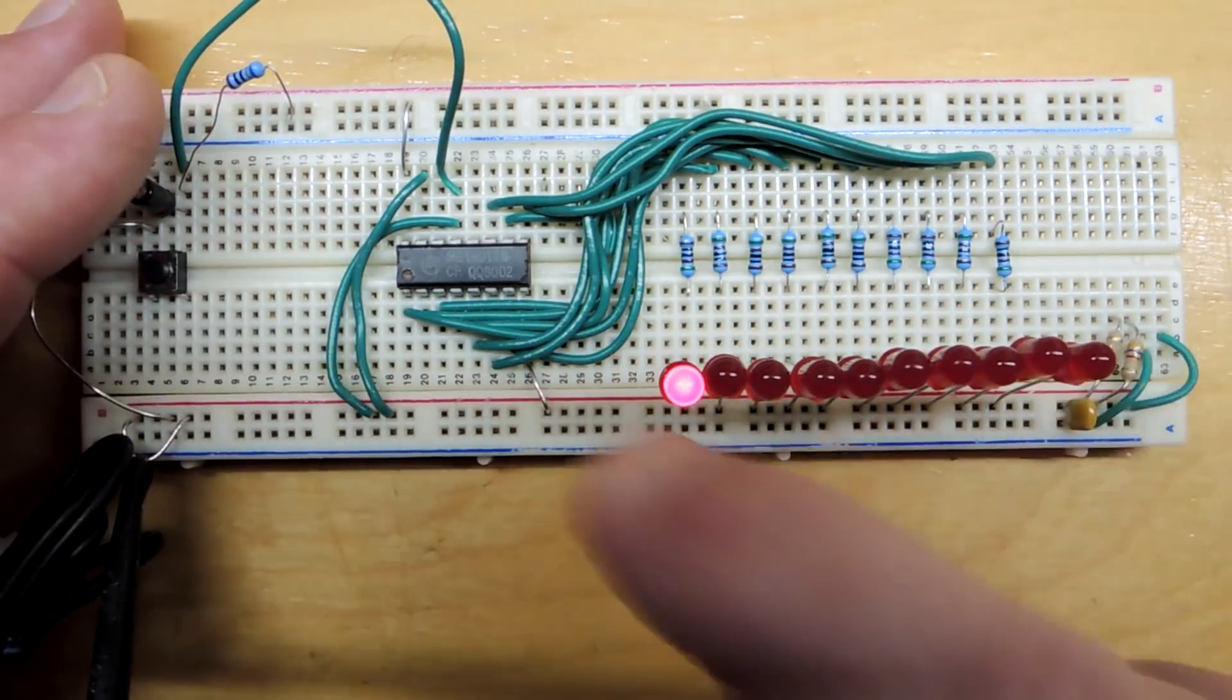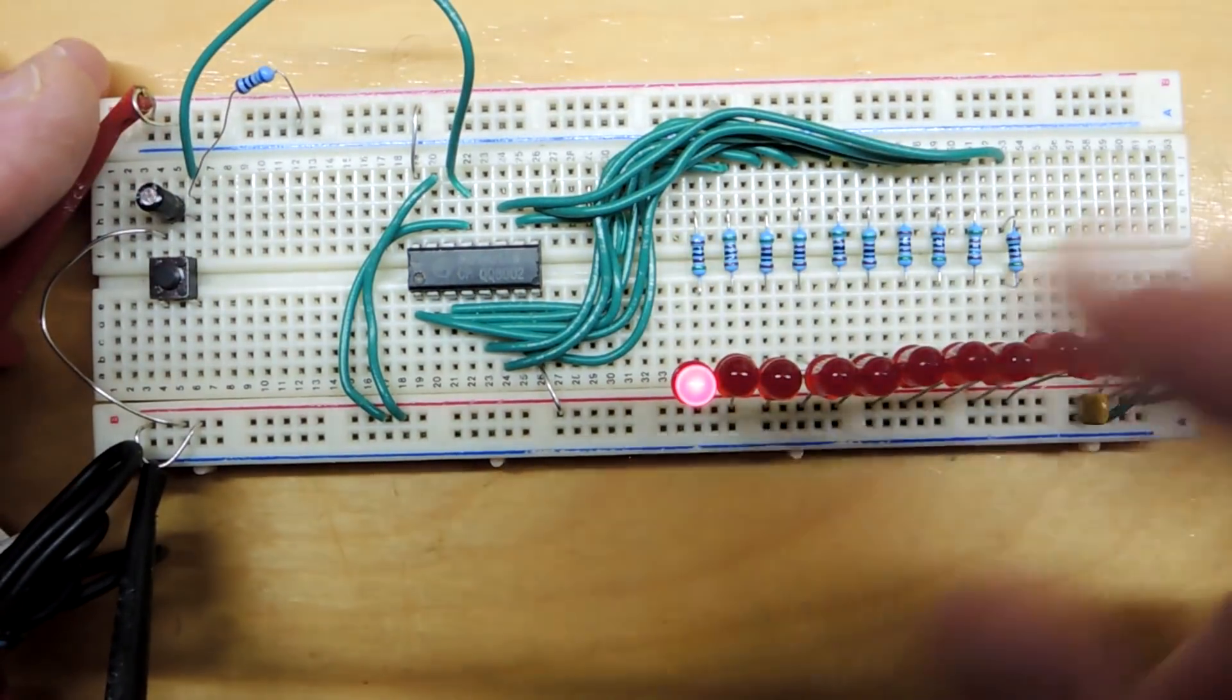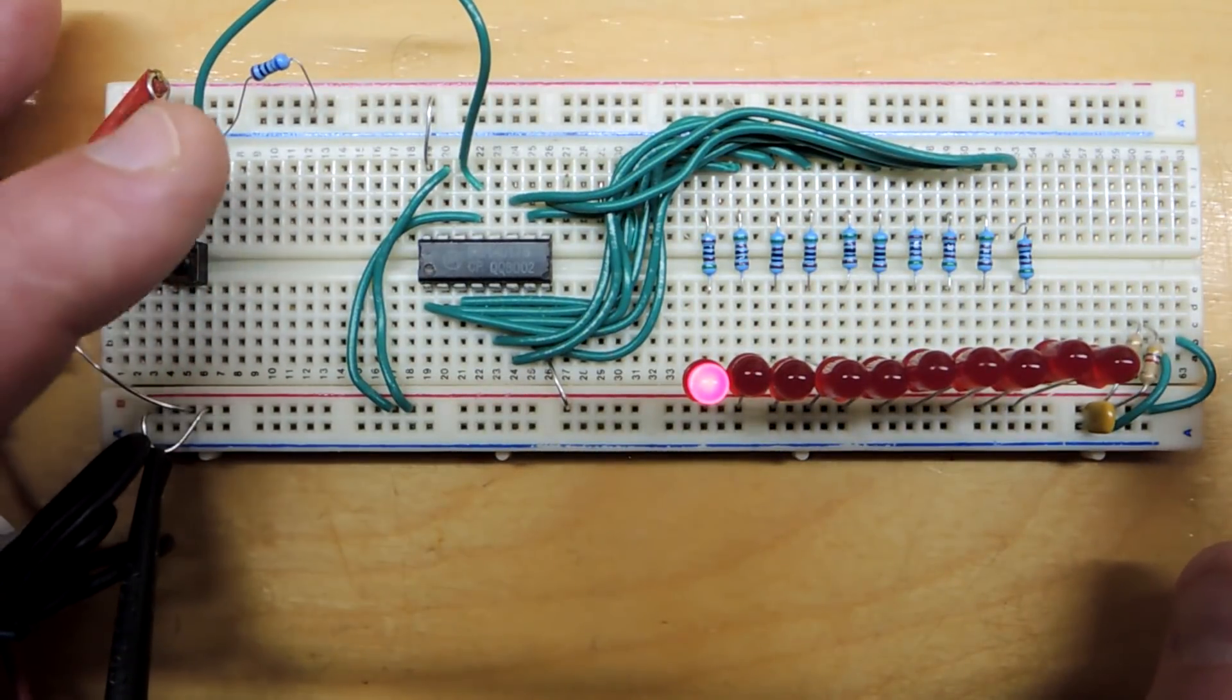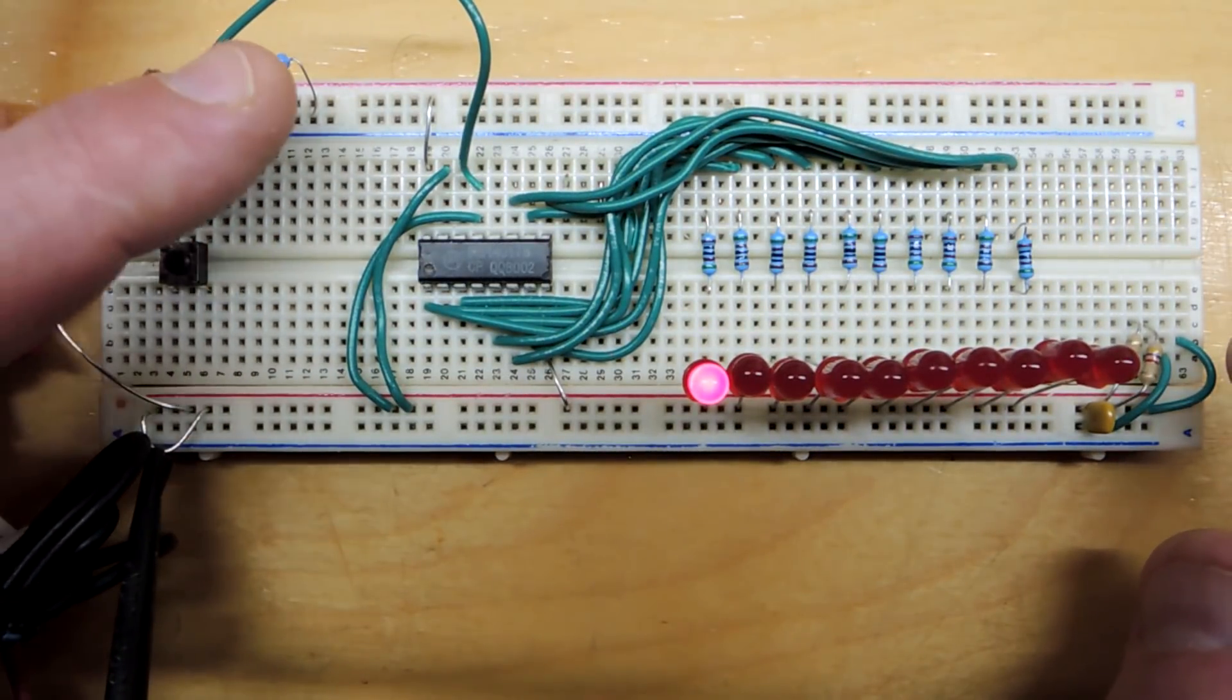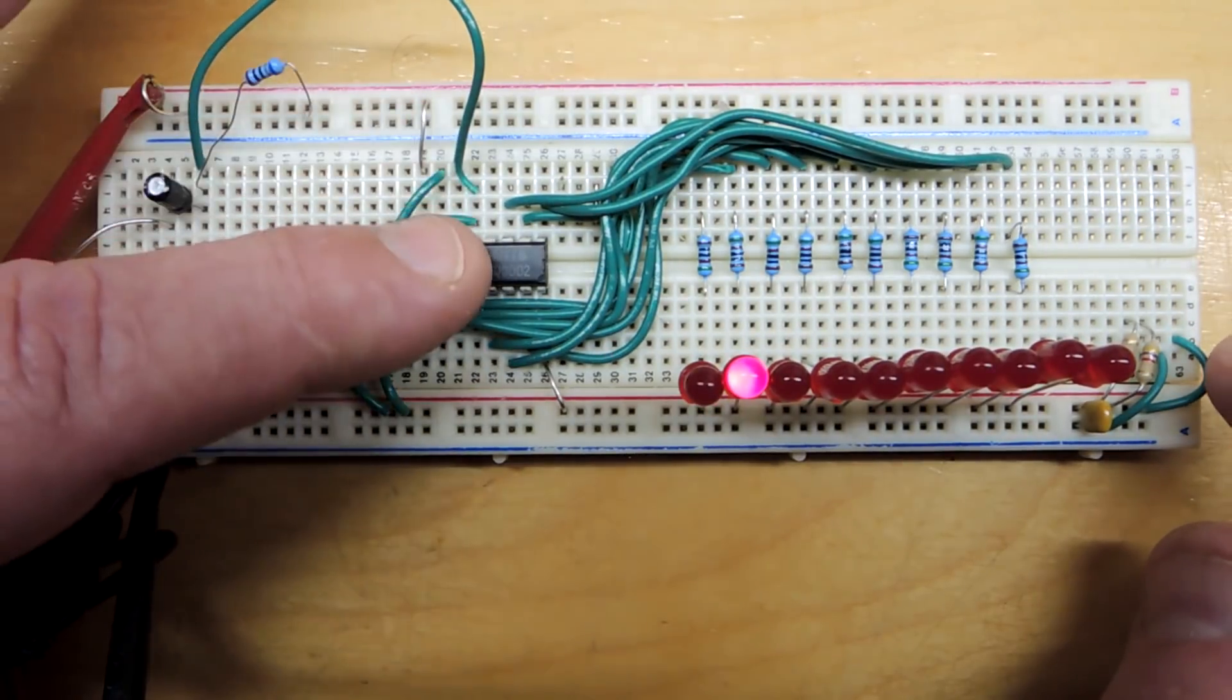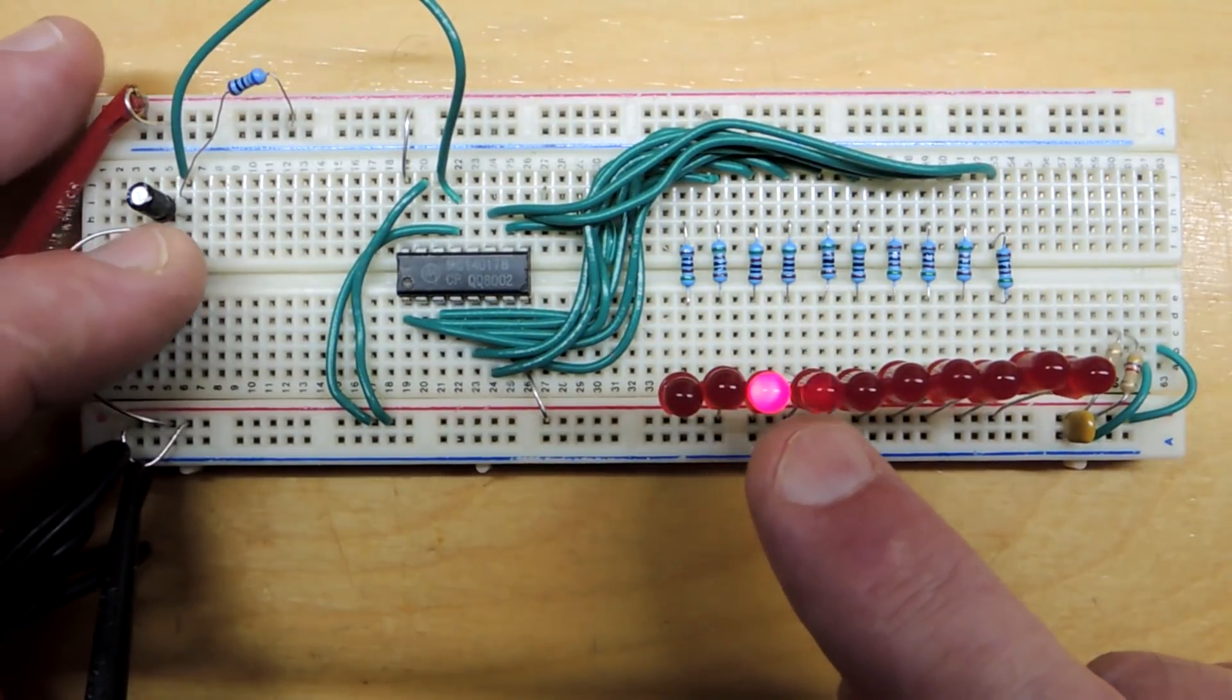I wired up a simple 4017 here, and each of the decade outputs, I have a current limit resistor and an LED, so basically we're monitoring all 10 outputs of the decade counter. Over here, a switch, a resistor, and a capacitor. This forms a debouncing circuit, so every time I press the switch, it sends a nice clean edge into the counter. And of course, you can see what happens every time I press it, the LED moves downwards.